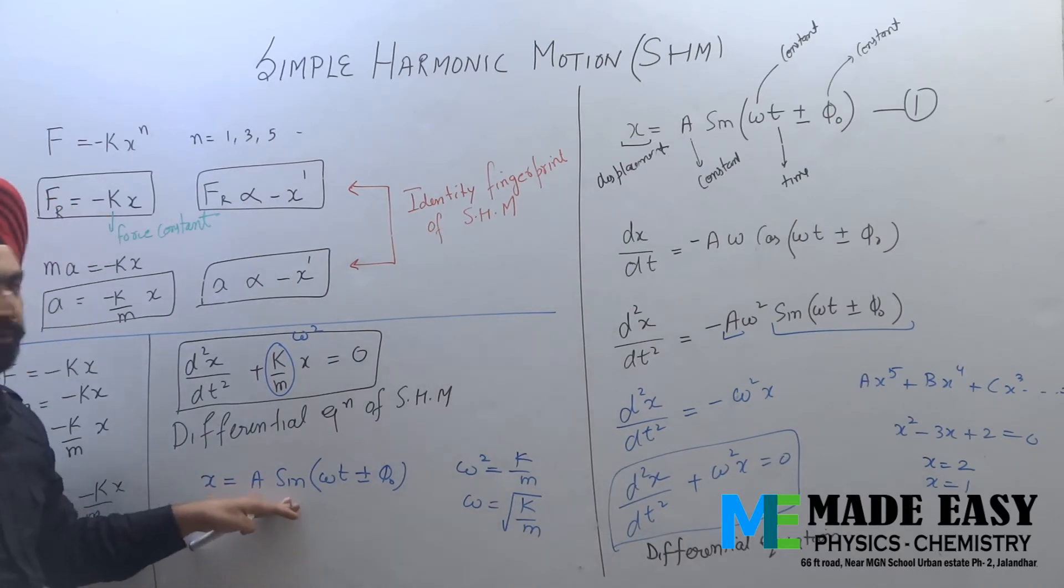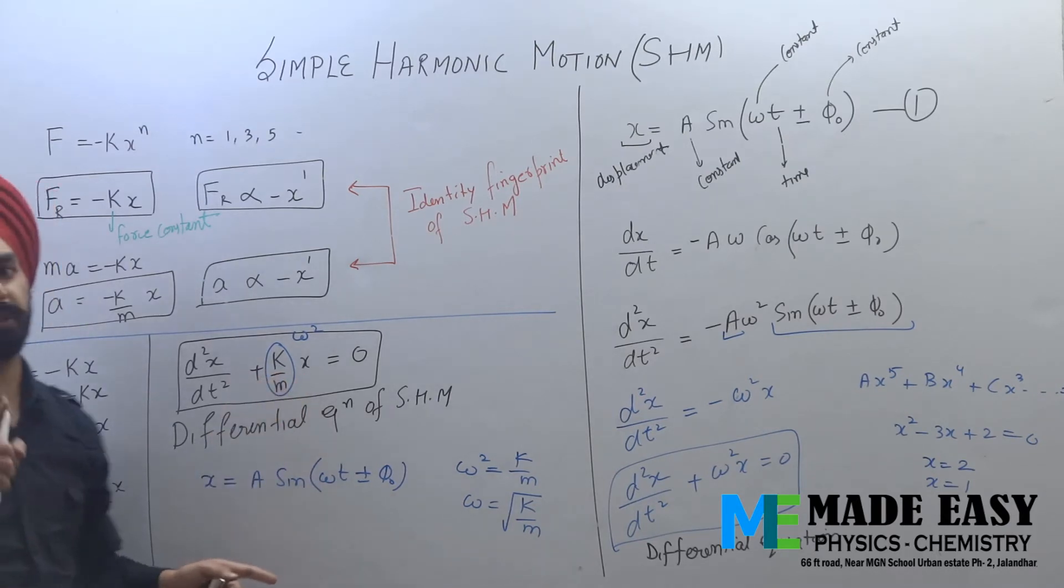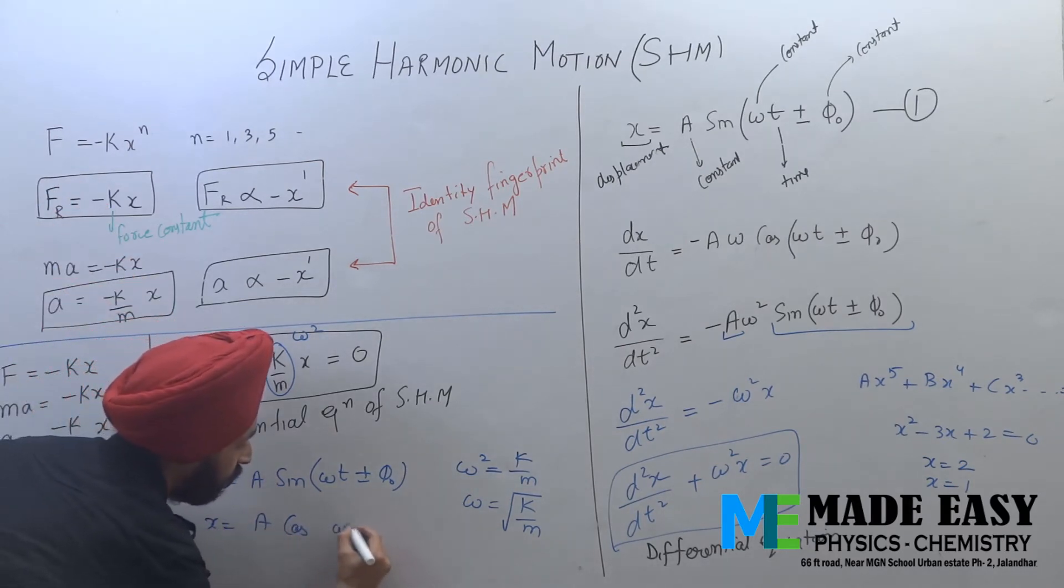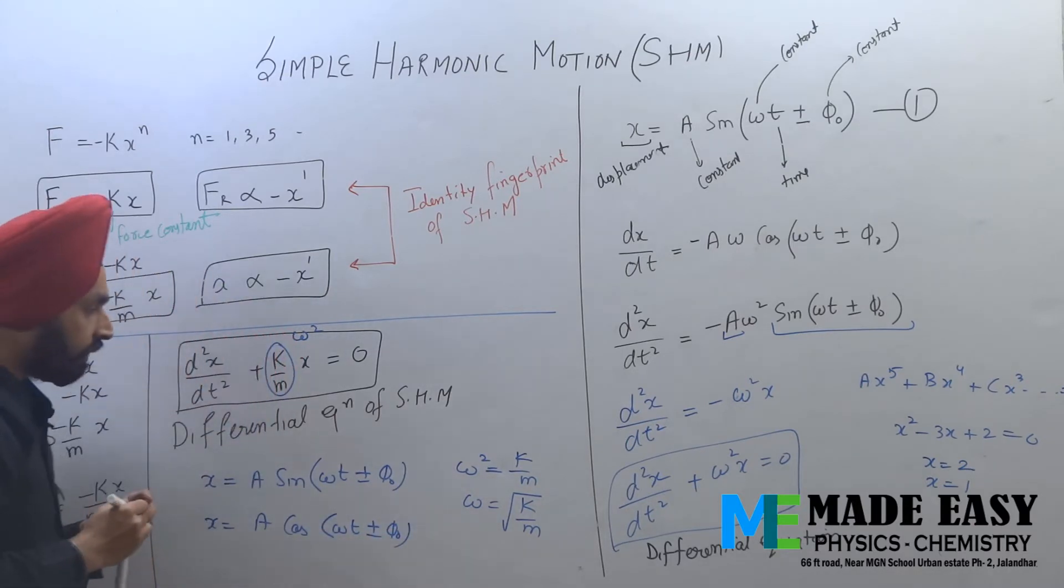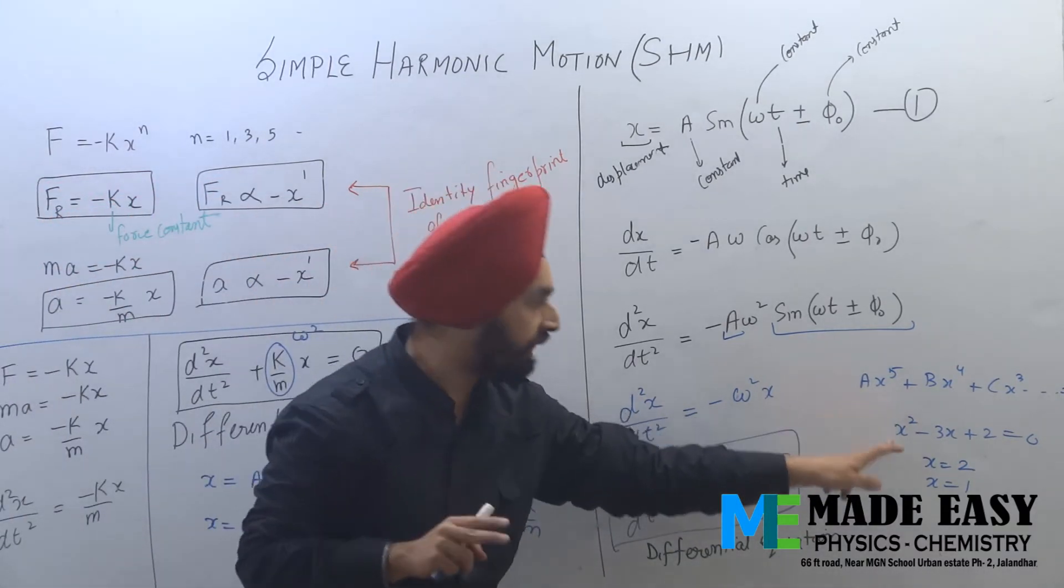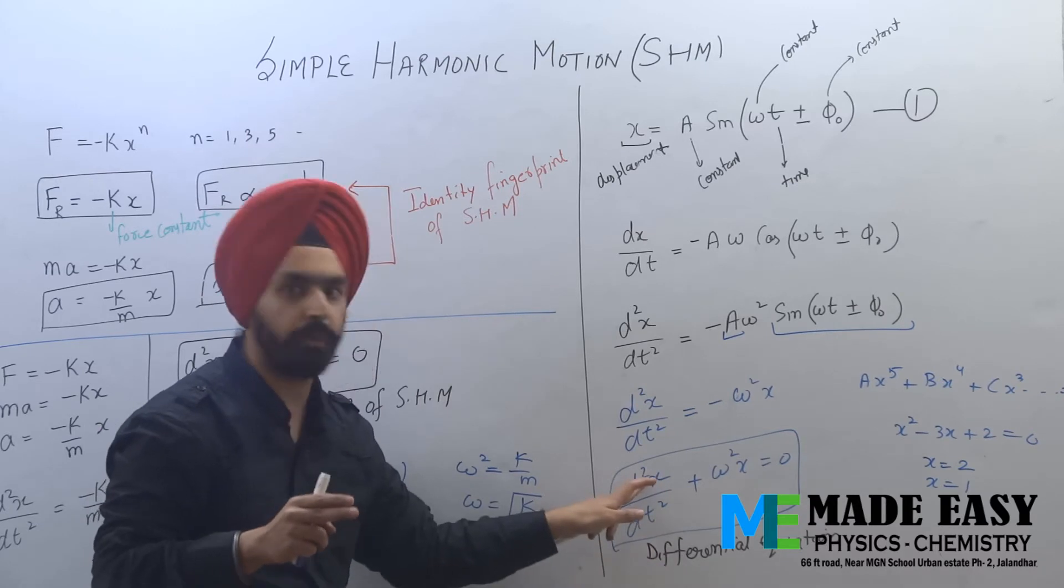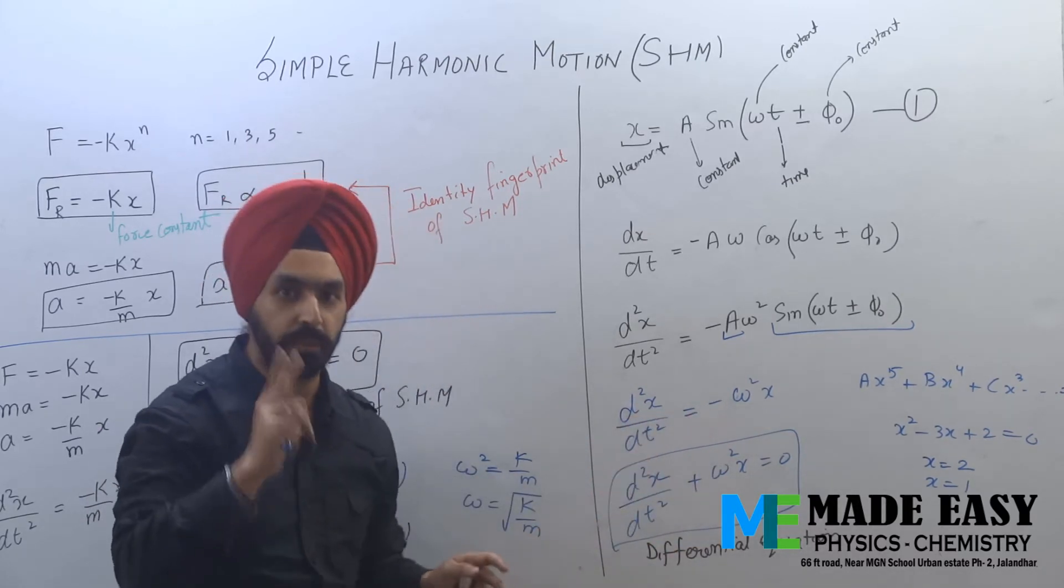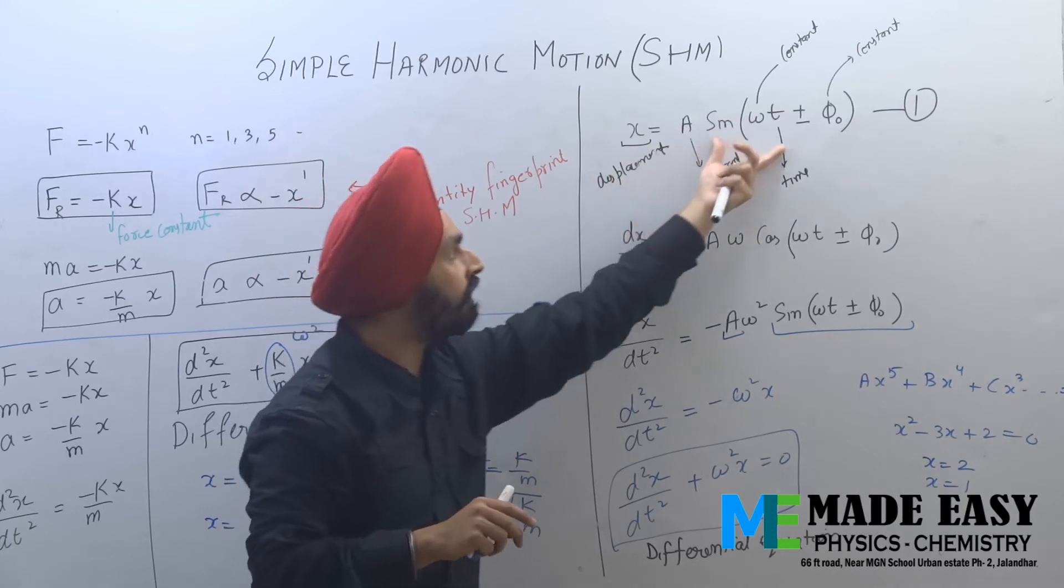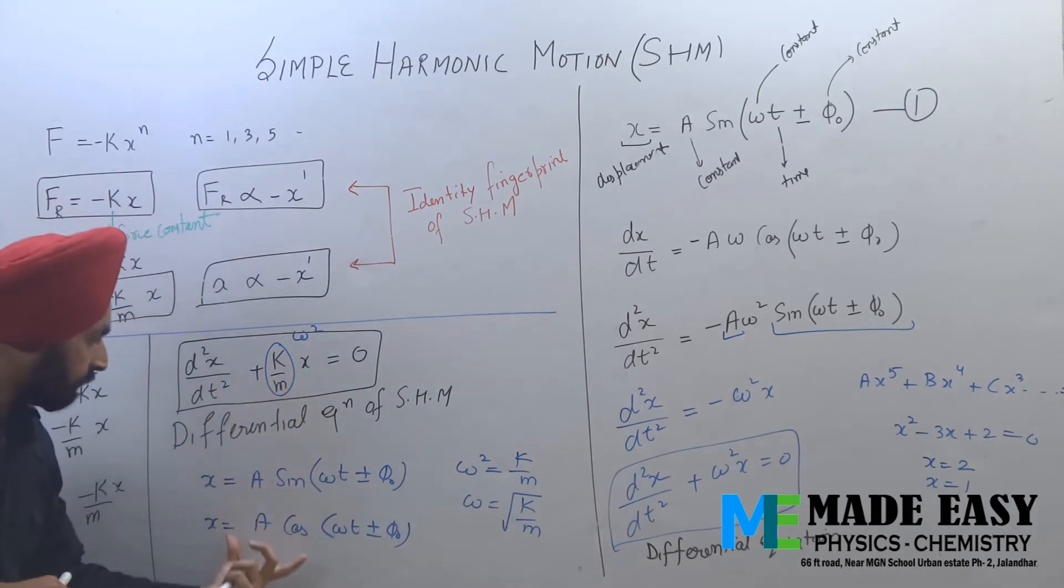Now if we solve this equation, we get x is equal to A sin omega t plus or minus phi naught, where omega square is equal to k by m, or we can say omega equals square root of k by m. This is the solution of this differential equation. This value of x will satisfy this equation. In fact, this is one of the solutions. There is another solution as well and that is x equals A cos omega t plus or minus phi naught. Why are we getting two solutions? Very simple reason - a quadratic equation has maximum power 2, so we get two values of x. Here as well, this is a second order differential equation with maximum power 2, so this differential equation also has two solutions. One is sin, the other is cos.